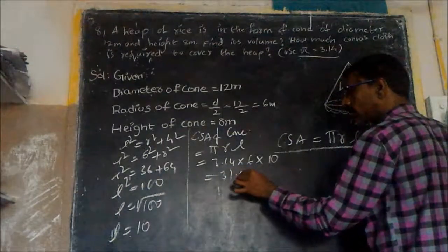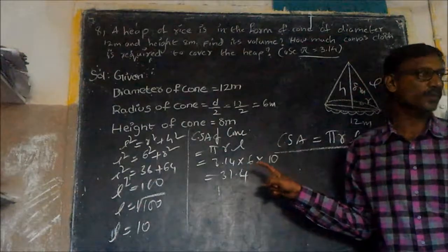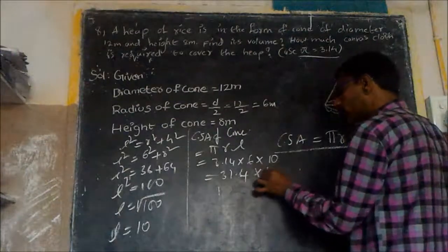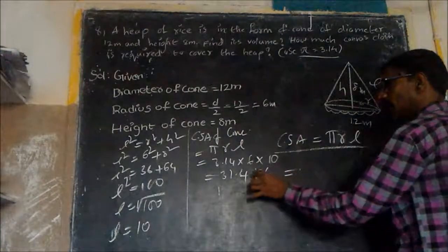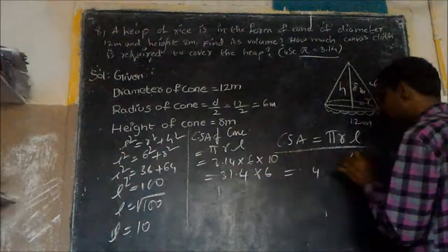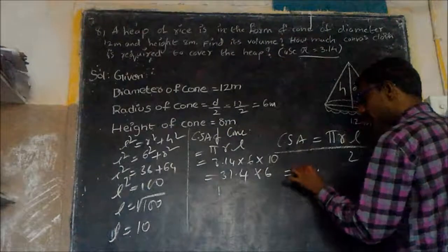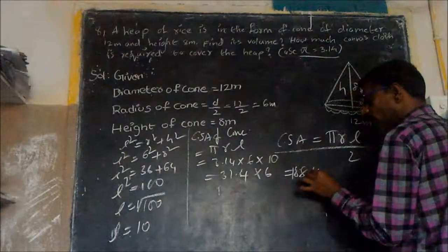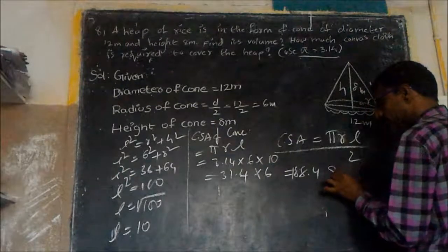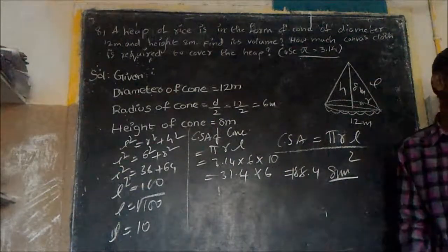31.4 multiplied by 6: 4 sixes are 24, carry 2; 1 six is 6 plus 2 is 8; 3 sixes are 18. That gives 188.4 square meters of cloth required to cover the heap.